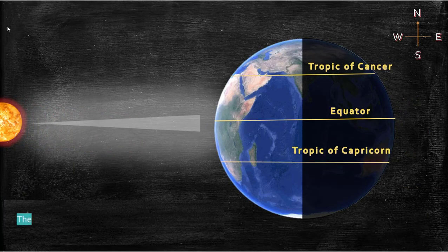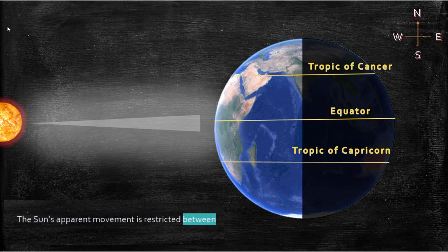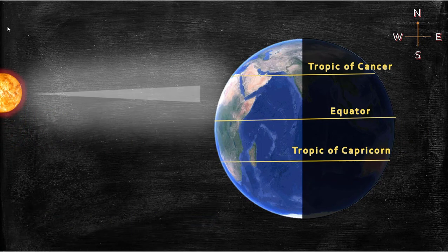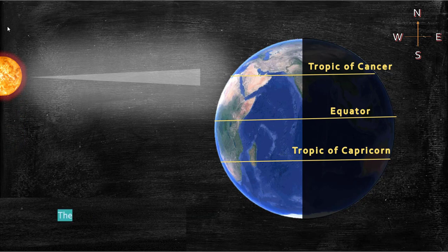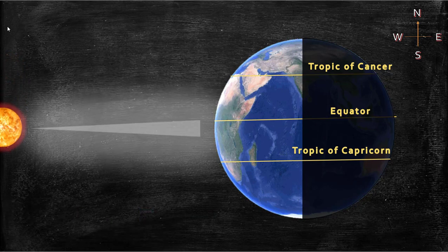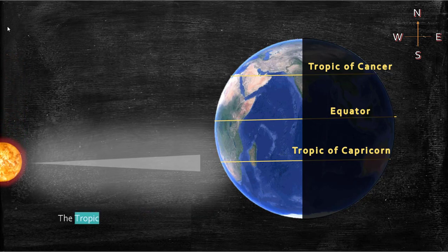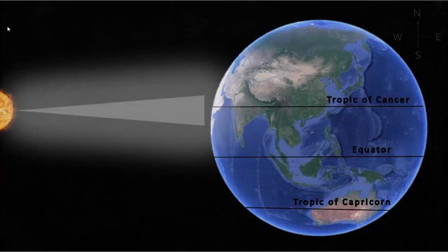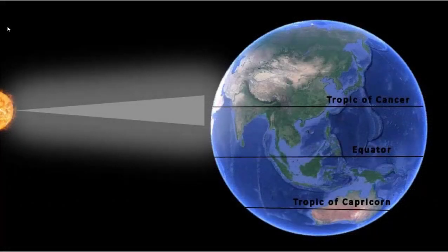The sun's apparent movement is restricted between the Tropic of Cancer and the Tropic of Capricorn. What is its implication on India? Observe the seasons changing as the sun moves between the tropics.